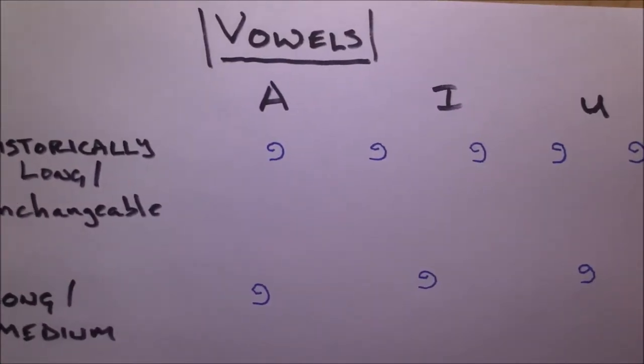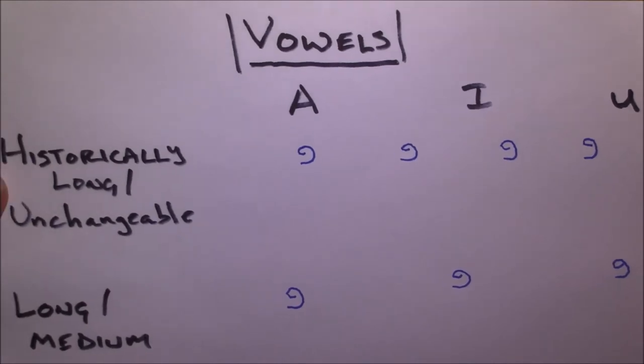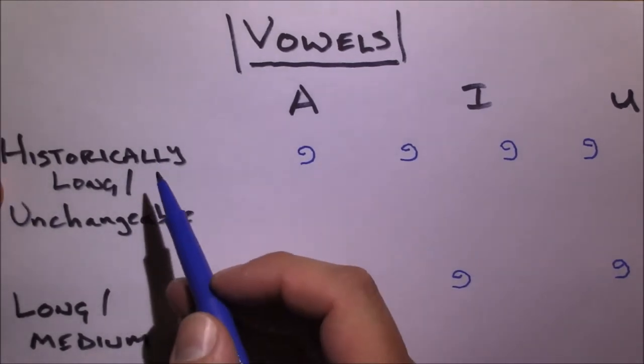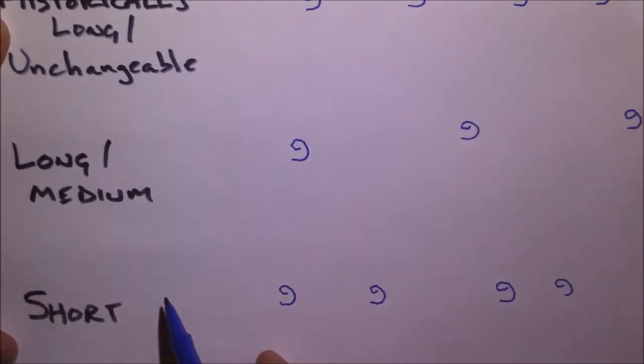All right, so we've got our consonants written out. Let's talk a little bit about what these various categories mean. So along the side here we have historically long or unchangeable. We have long, medium, and short.